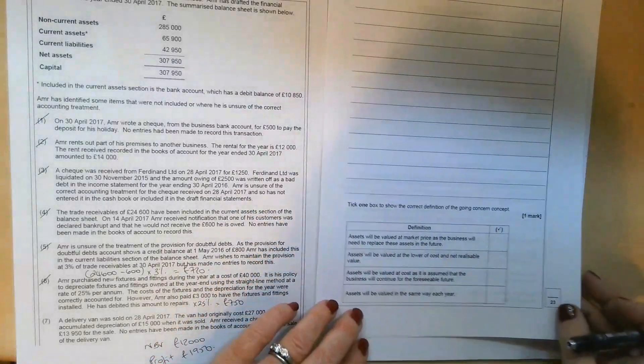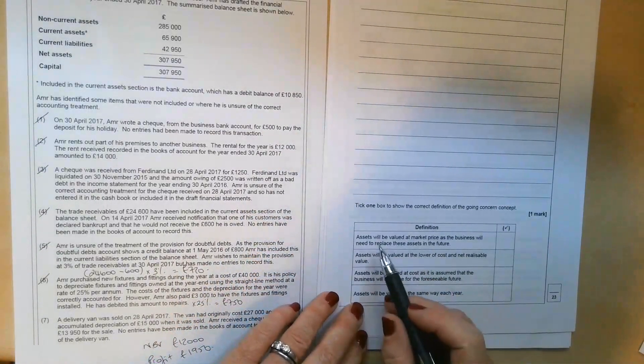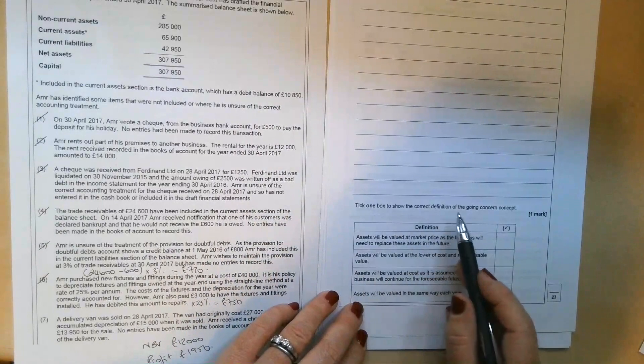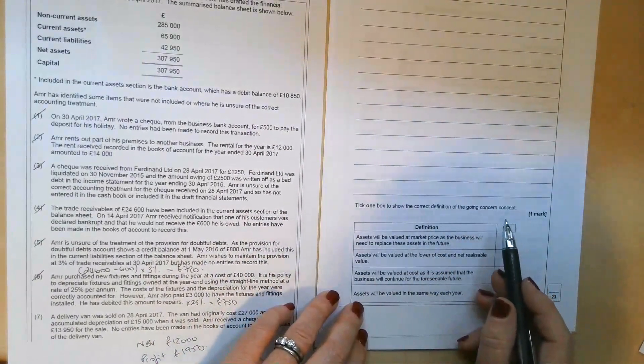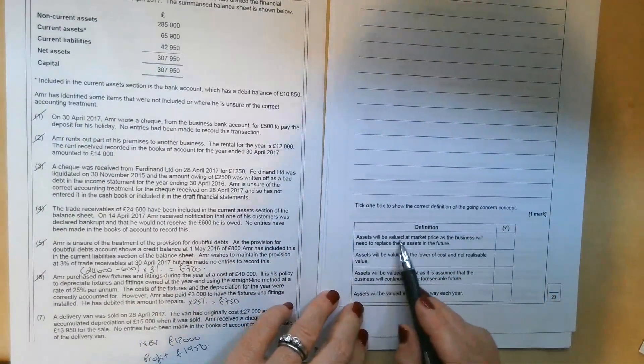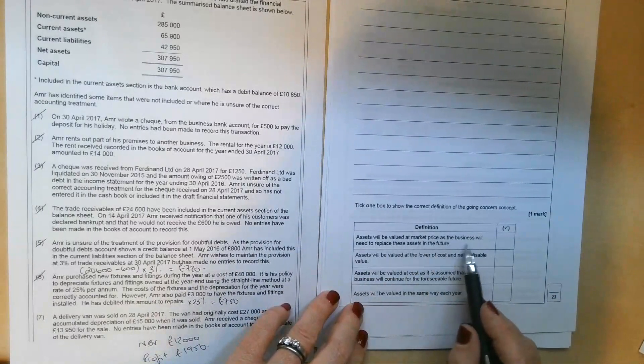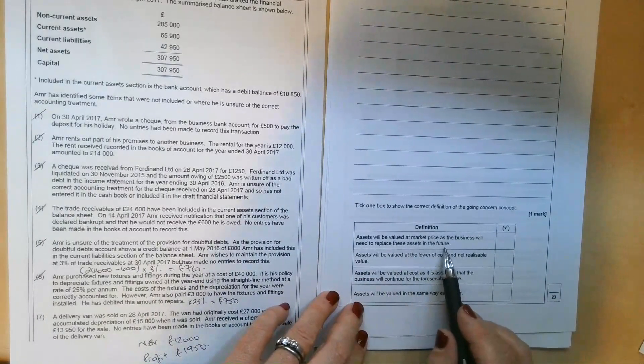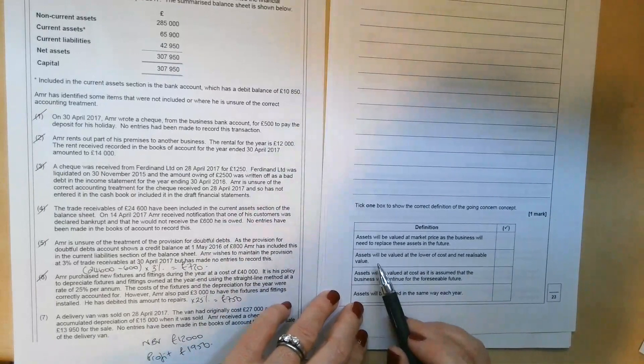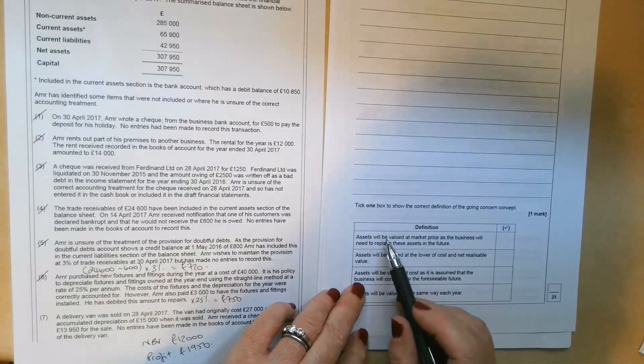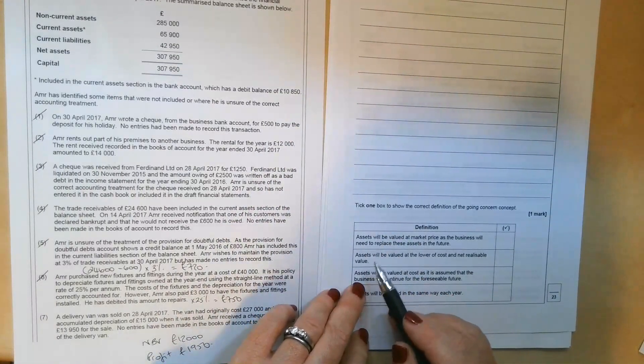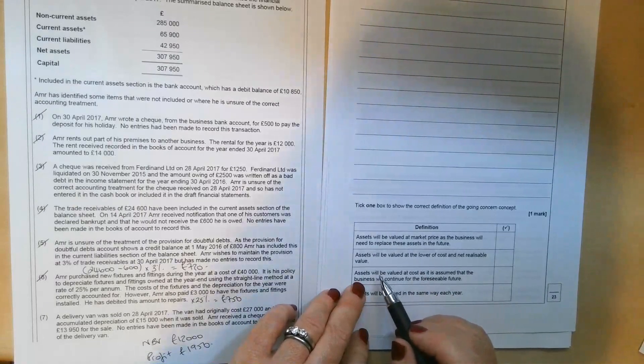One extra little piece on this question, a little one mark multiple choice question. It says, tick one box to show the correct definition of the going concern concept. So quite random there. Assets will be valued at market price as the business will need to replace these assets in future. I don't think it's that one. Remember the going concern concept is the presumption that the business will continue to trade for the foreseeable future.